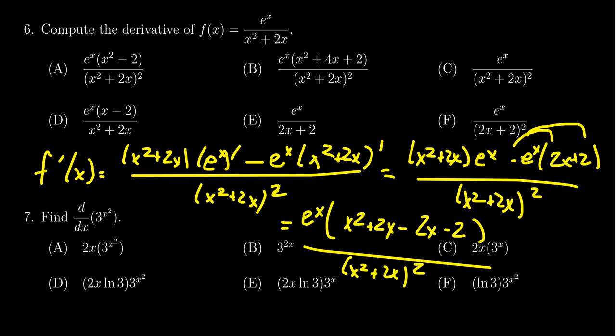Notice now, once you factor out the e^x, the 2x is cancelled out. You're left with x² - 2. You have e^x, and this is all above (x² + 2x)². So we see that the correct answer would be A using the quotient rule.